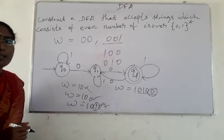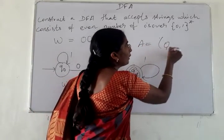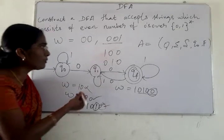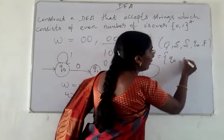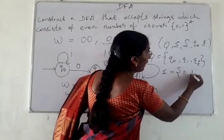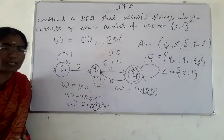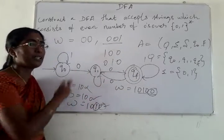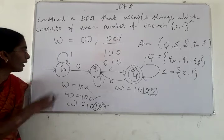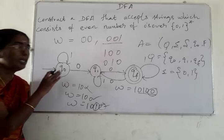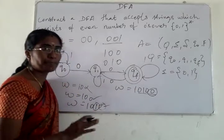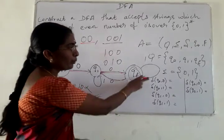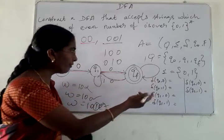To formally define this DFA: A = (Q, Σ, δ, Q0, F). The set of states Q = {Q0, Q1, QF}. The input alphabet Σ = {0, 1}. There are 6 transitions in total — 2 for each state. The start state is Q0 and the final state is QF.